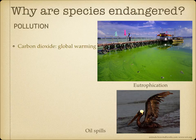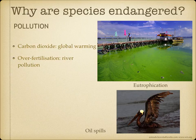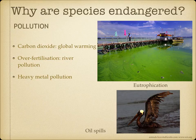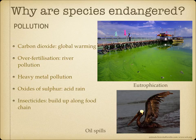Pollution is another cause. For example, an increase in carbon dioxide increases global warming. Overfertilization leads to river pollution and eutrophication, which you can see in this picture. Heavy metal pollution and oxides of sulfur lead to acid rain. Oil spills, which you can see in this picture, are also a major concern. Insecticides build up along the food chain.